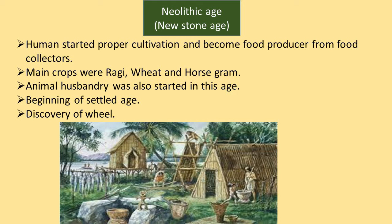Now, come to the Neolithic Age. The word 'Neo' means new, so it was a new age. After the Middle Age, this age is known for sharper and more polished tools. Their tools were more polished and sharper because men became more intelligent in this age. They started living a settled life, and proper cultivation was also started. The early man became a food producer from a food collector.